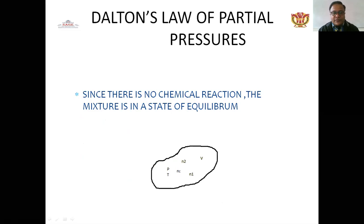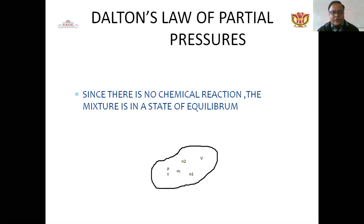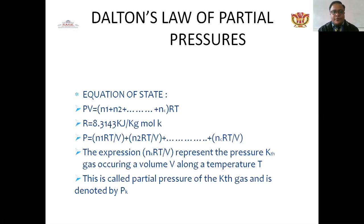We assume the mixture is in a state of equilibrium. So that is the state of equilibrium conditions. Dalton's Law gives us PV = nRT, where n is the number of moles.